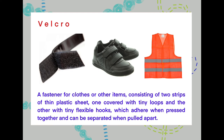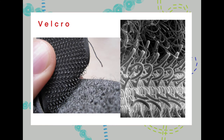Moving on to Velcro. Velcro is a fastener for clothes or other items consisting of two strips of thin plastic sheet — one covered with tiny loops and the other with tiny flexible hooks — which adhere when pressed together and can be separated when pulled apart. Velcro is not as common on mainstream clothing, however we do find it on shoes and on high-vis workwear jackets. I've shown Velcro up close so you can see these working together in the large microscopic image there — it looks like something out of a sci-fi film.